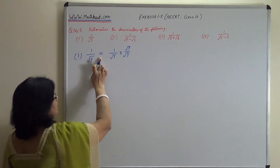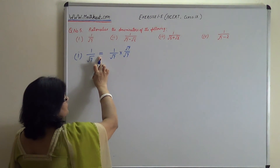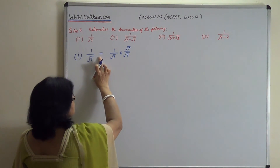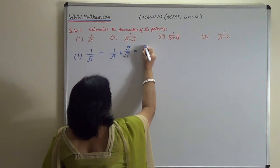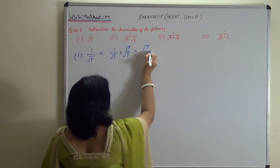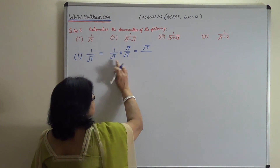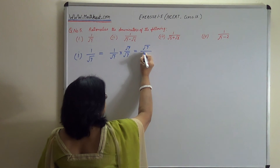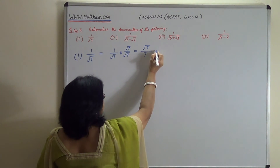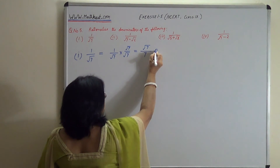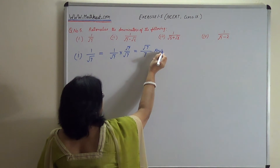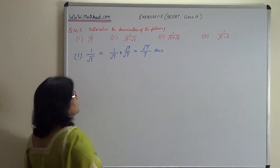We can use the equal sign. This equals root 7 upon root 7 into 7, which equals root 7 upon 7. This is our answer for the first part.